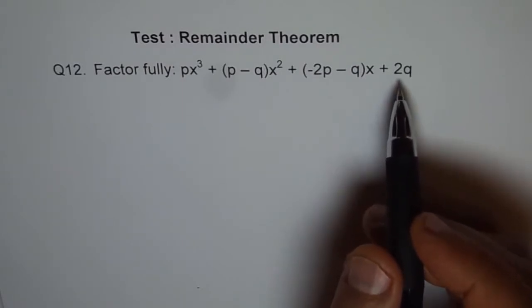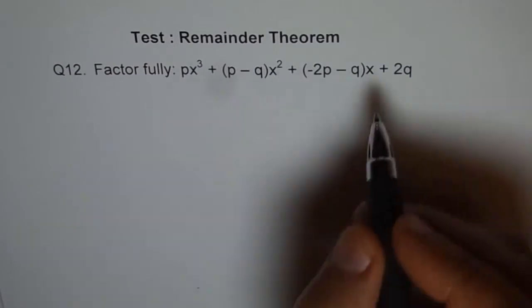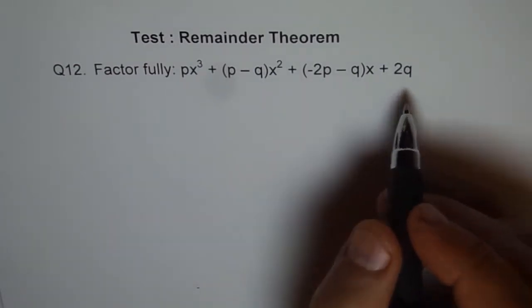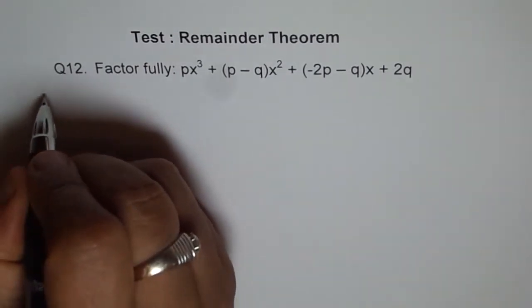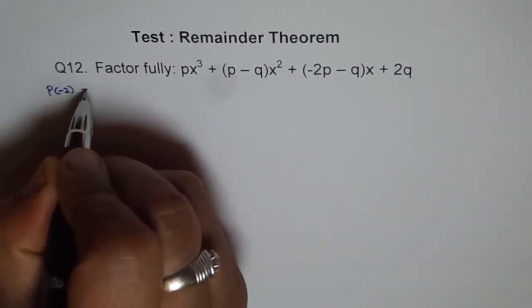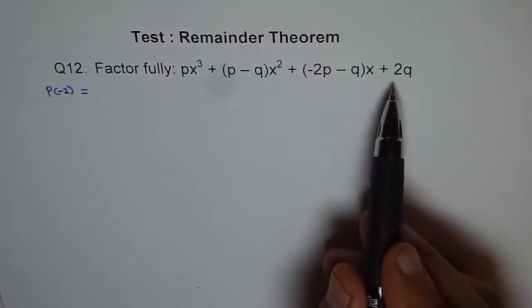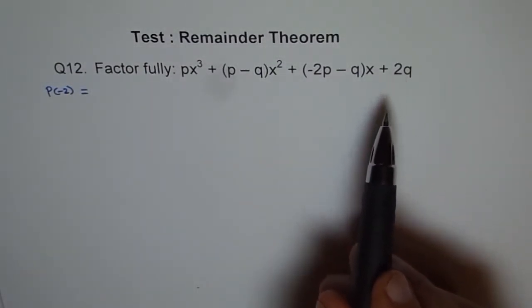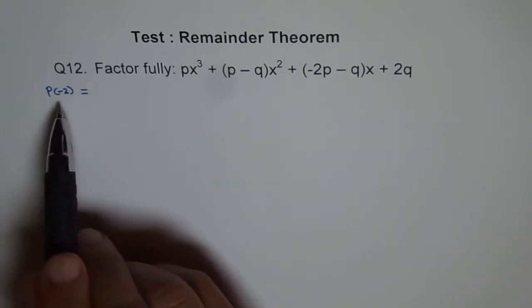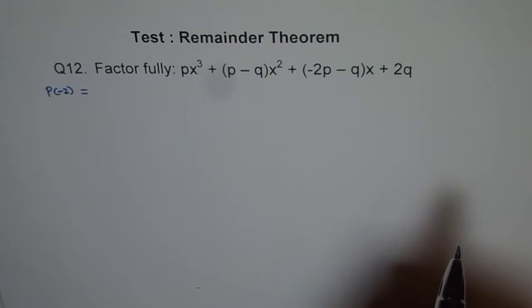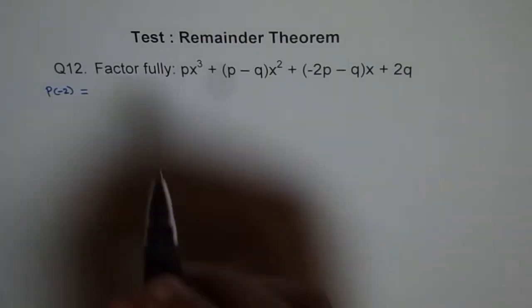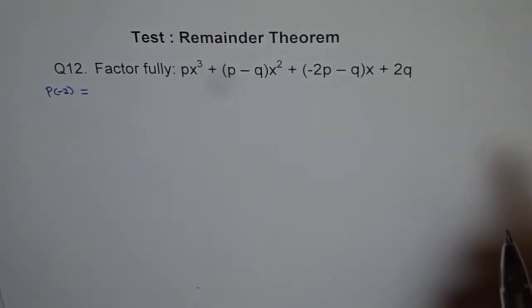You can try each and every number one by one and then see which gives you 0. Well, I did this exercise and found that p of minus 2 was 0. So let me do p of minus 2 now here. These questions could be very tedious and sometimes may take a lot of time, so you really need patience while factoring polynomials, especially one like this.